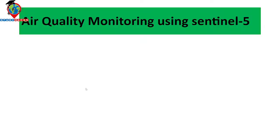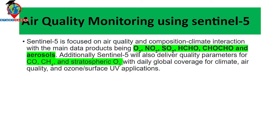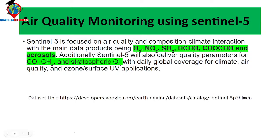For air quality monitoring using Sentinel-5 satellite imagery: Sentinel-5 is focused on air quality and climate interaction, with main data products including ozone, nitrogen dioxide, sulfur dioxide, formaldehyde, aerosol, carbon monoxide, and methane. You can access all these products from the provided dataset link, or simply go to the Google Earth Engine code editor.